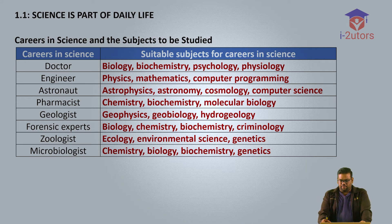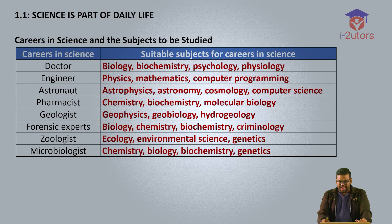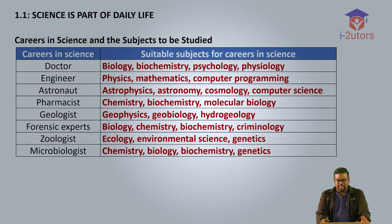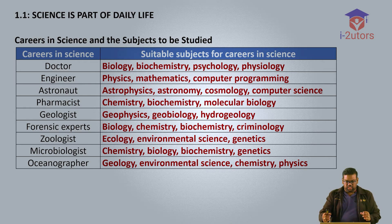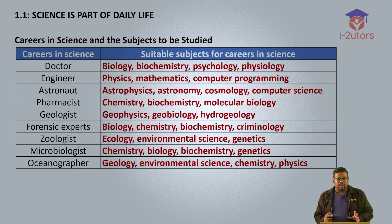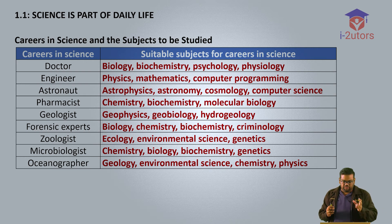Number 8, microbiologist — study chemistry, biology, biochemistry and genetics. And the last one, oceanographer — basically requires geology, environmental science, chemistry and physics. So these are the science careers and the subjects that you need to study for each one.